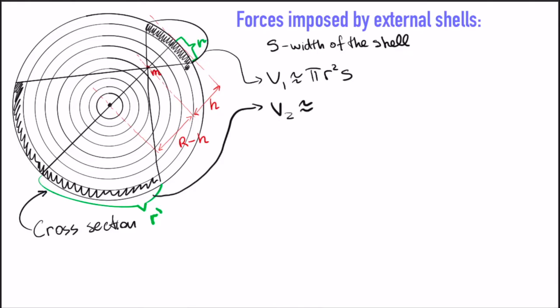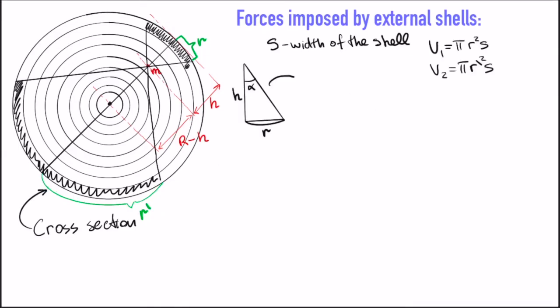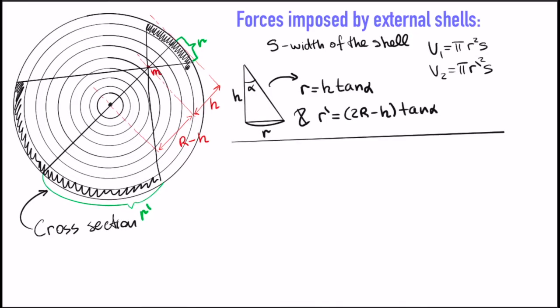We likewise calculate the volume of the other bit here. It requires a simple trigonometry to write r and r' in terms of h, r and the angle of the wedge. Remember that mass is simply volume times density, and the density, by assumption, is constant.